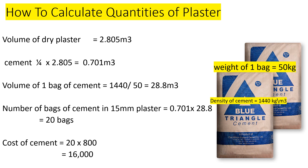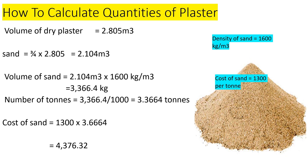Now we find how much cement is in the plaster. With a ratio of 1:3, the cement content is 1 over the total ratio (which is 4), multiplied by 2.805, giving us 0.701 cubic meters of cement. The volume of one 50 kg bag of cement is calculated from the density, giving us approximately 0.0347 cubic meters per bag. Dividing 0.701 by the volume per bag, we need approximately 20 bags of cement. The cost of cement is 20 bags multiplied by 800 shillings per bag, giving us 16,000 shillings.